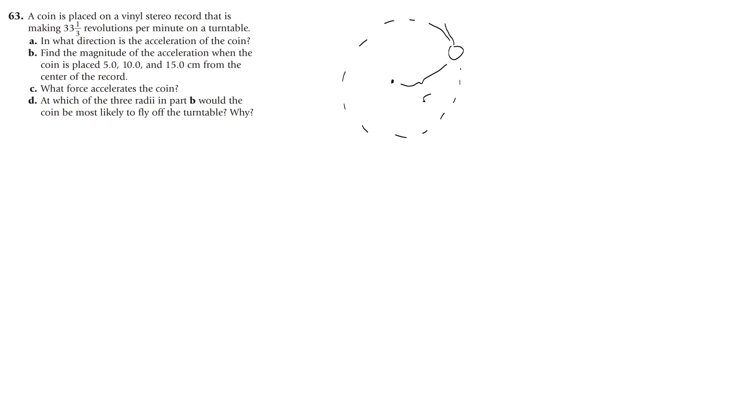And as the coin moves in a circle it will have a linear velocity V and an acceleration pointed towards the center that is changing the direction of the velocity.